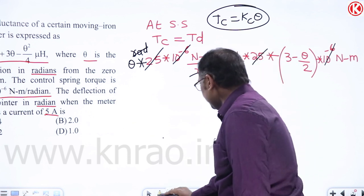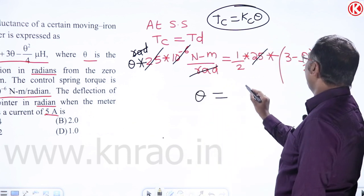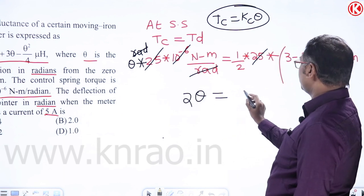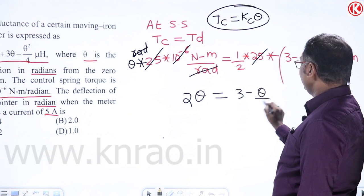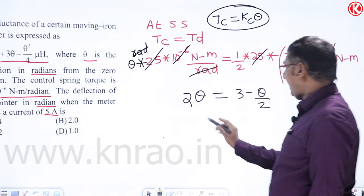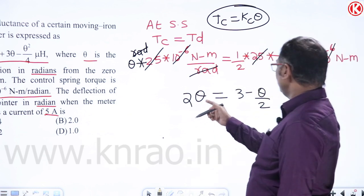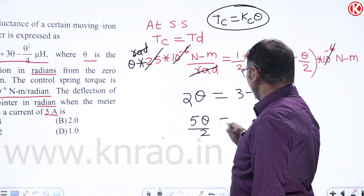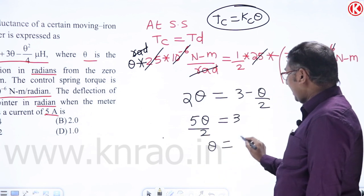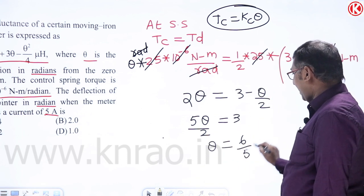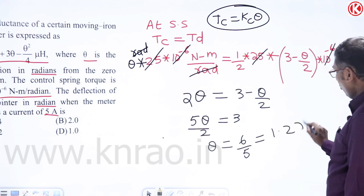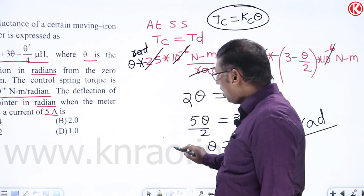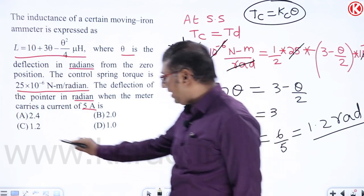To summarize Problem 1: using Td = ½i² dL/dθ and equating with Tc = Kc·θ at steady state, then differentiating the given L equation and substituting directly, we get θ = 1.2 radians. The method involves straightforward differentiation and substitution.